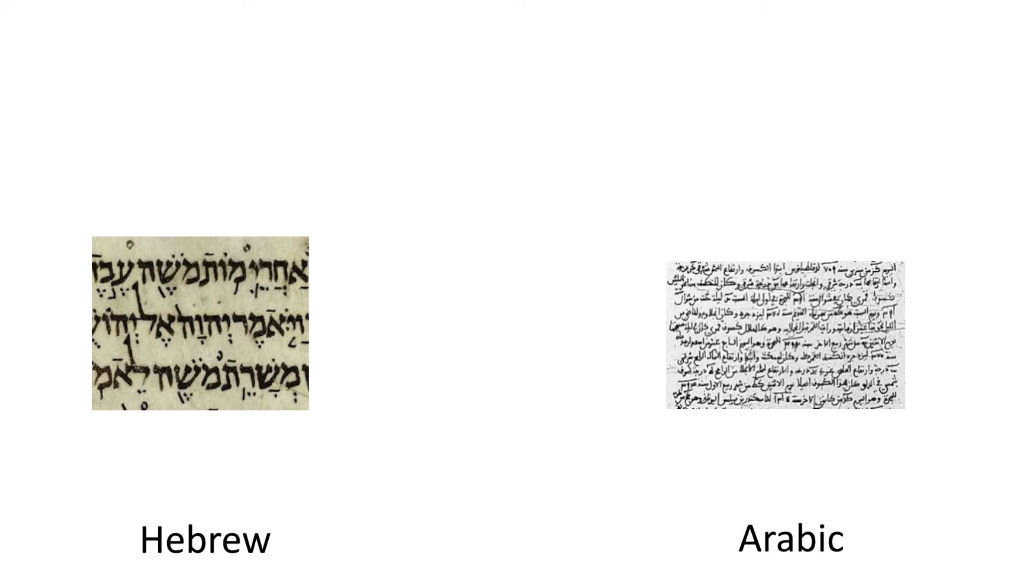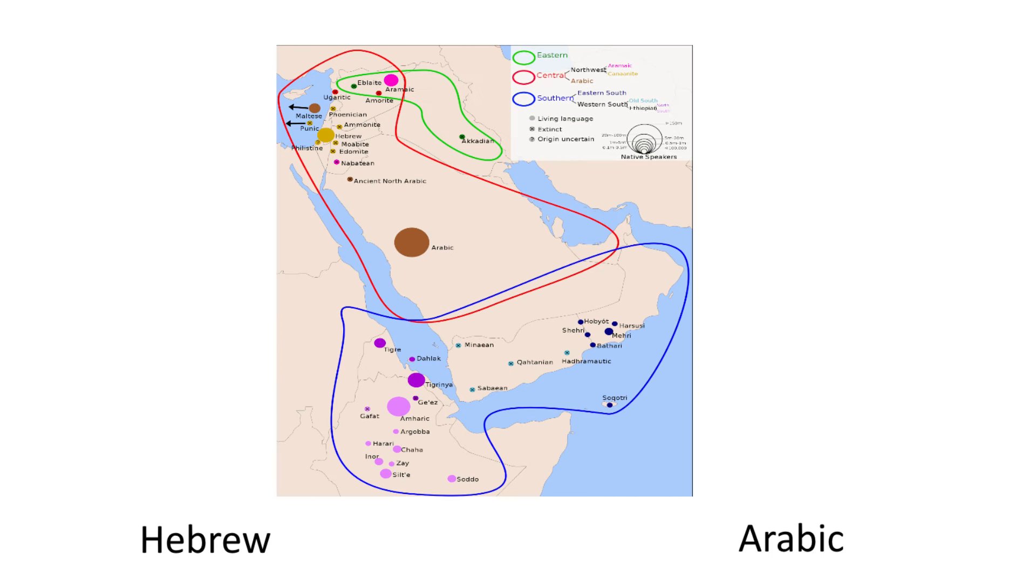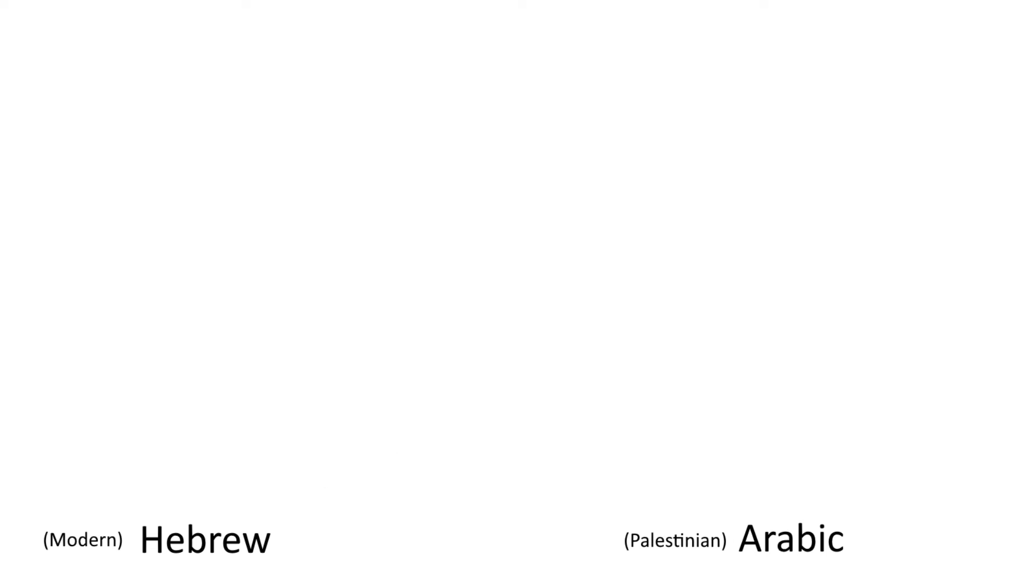Hebrew and Arabic are perhaps the two most iconic Semitic languages. The Semitic languages are a language family that comprises many known languages once or still spoken mainly in the Middle East and Ethiopia. In this video we will compare Hebrew and Arabic, specifically modern Hebrew and Palestinian Arabic. We will focus on the consonant correspondences.